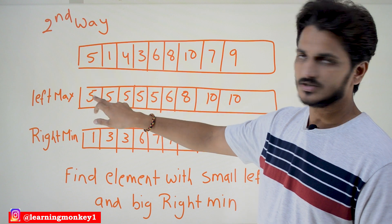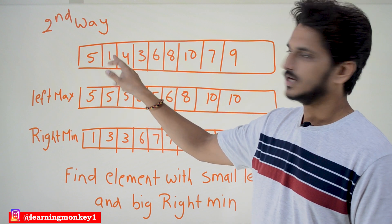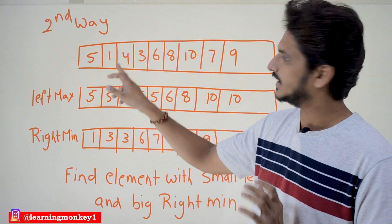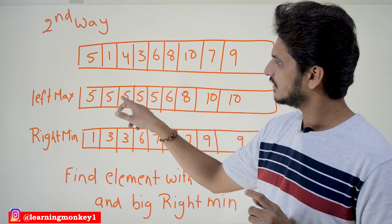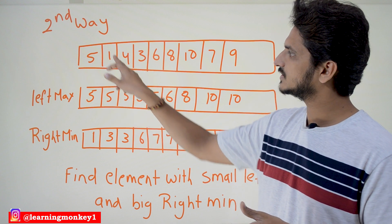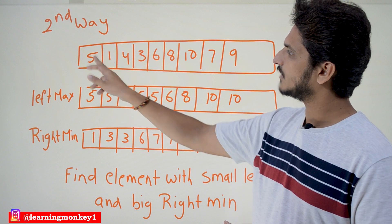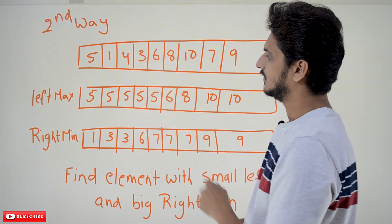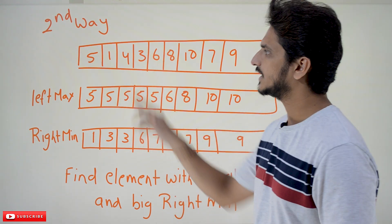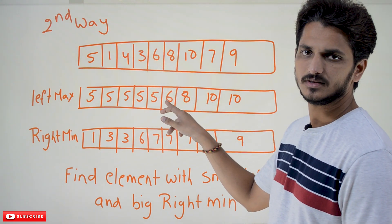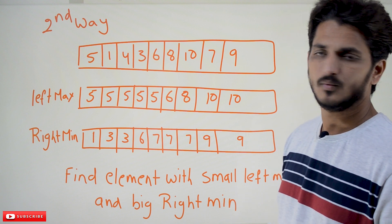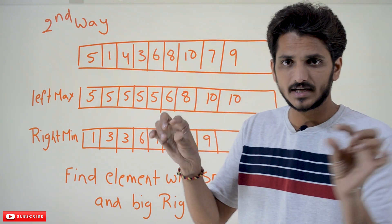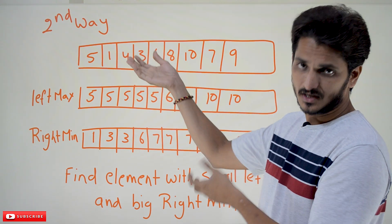Left max means: place the first number as it is. For each subsequent element, maintain the maximum element on the left hand side. For element 1, the left side is 5, so left max is 5. For 4, left side is 1 and 5, so left max is 5. For 3, left side is 5, 1, 4 — left max is 5. For 6, left side is 5, 1, 4, 3 — left max is 5. For 8, left side is 5, 1, 4, 3, 6 — left max is 6. We identify this with a single loop that executes n times, always maintaining the maximum element.